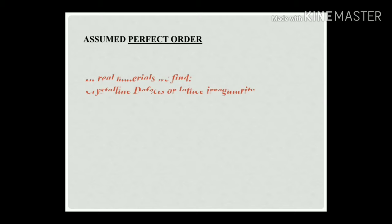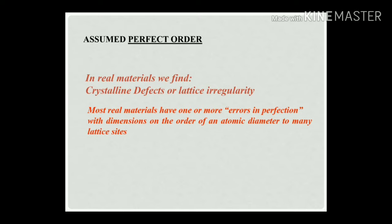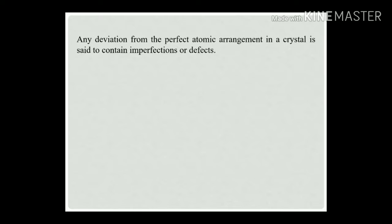In real materials there are crystalline defects or lattice irregularities. The irregularities present in the structure are called an imperfect structure of the materials, said to be imperfections in solids. Most real materials have one or more errors in perfection with dimensions on the order of an atomic diameter to many lattice sites. Any deviation from the perfect atomic arrangement in a crystal is said to contain imperfections or defects.